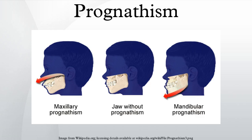Maxillary prognathism is a protrusion of the maxilla and is also a common feature of many populations. It is not to be confused with micrognathism, although combinations of both may be found. It affects the middle third of the face, causing it to jut out, thereby increasing the facial area.